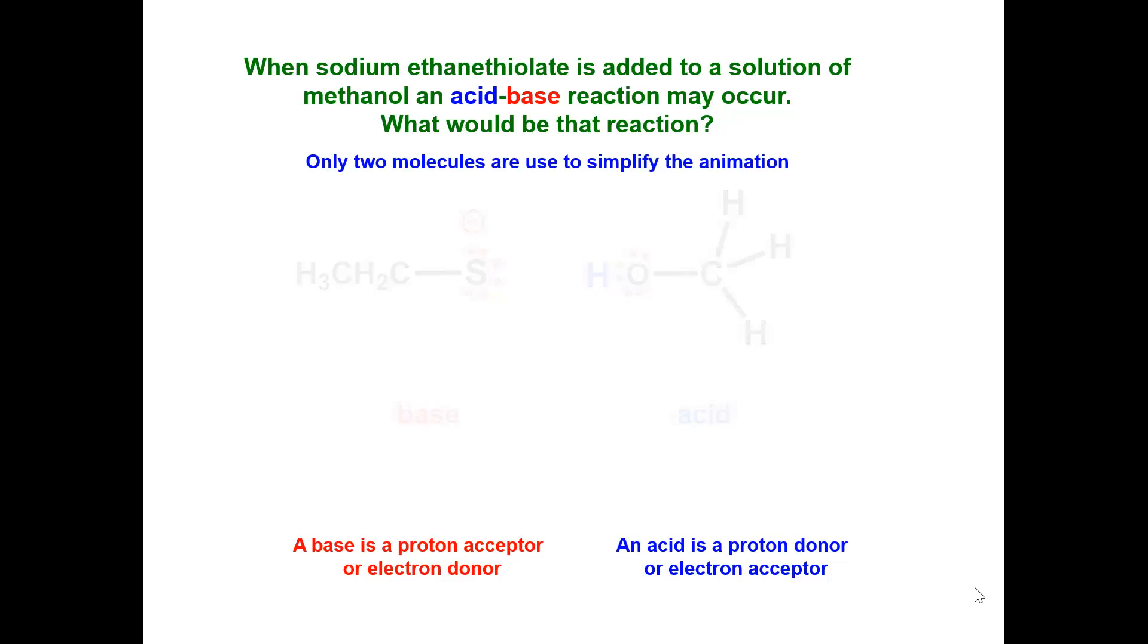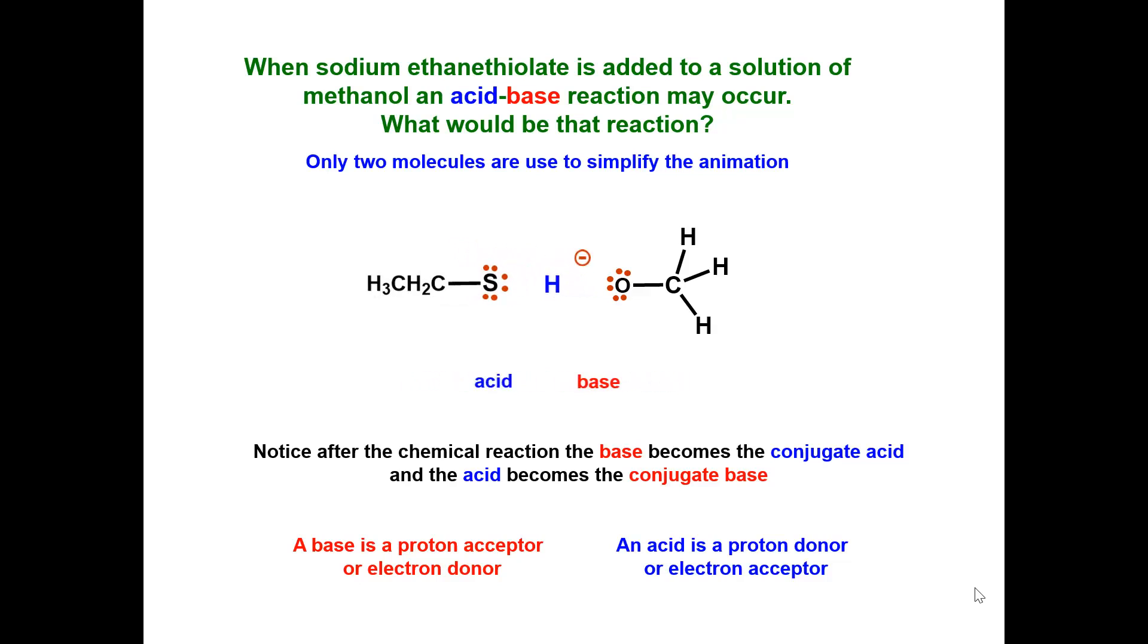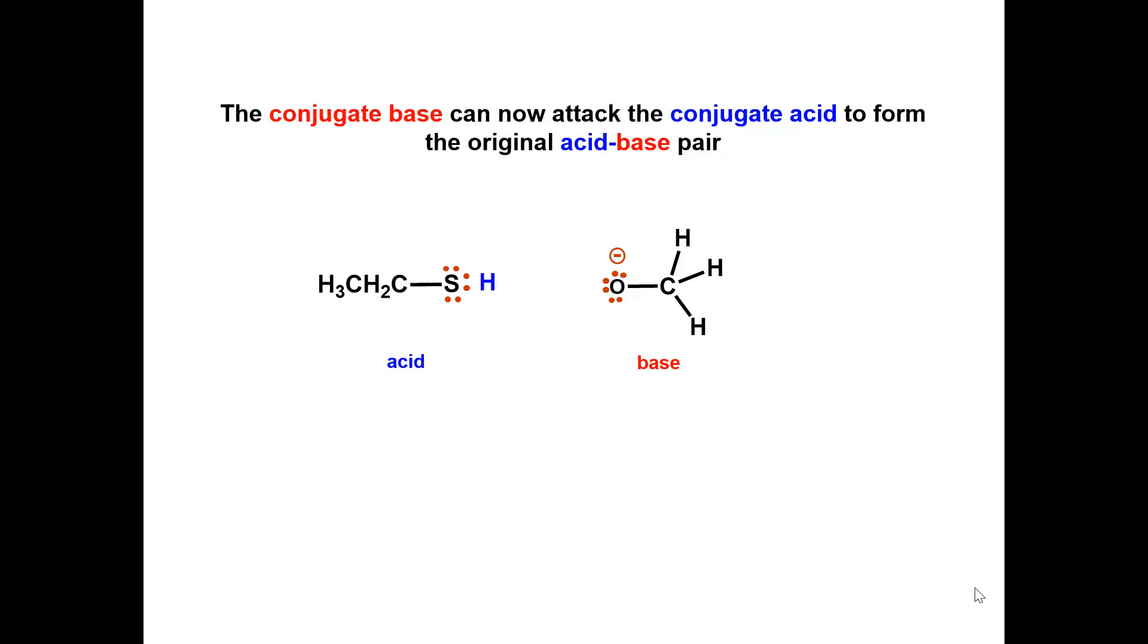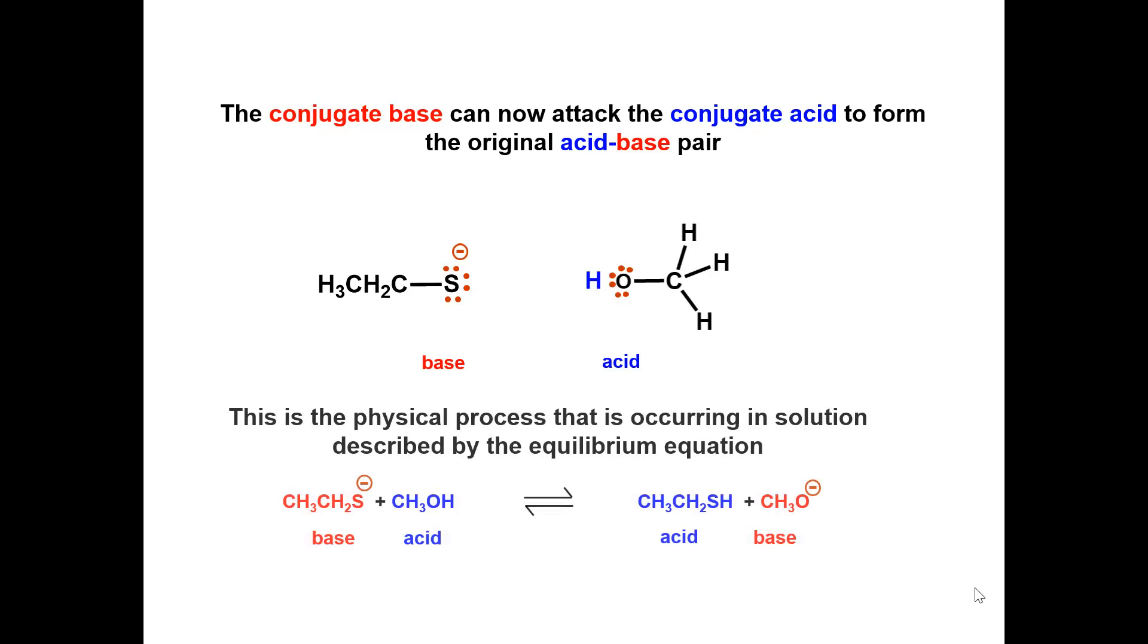After the reaction, notice the base becomes the conjugate acid and the acid becomes the conjugate base. Now the conjugate base can attack the conjugate acid to form the original acid-base pair. This is the physical process occurring in solution described by the equilibrium equation.